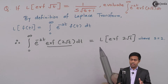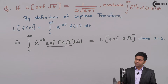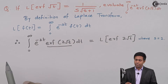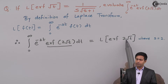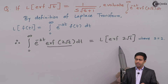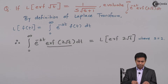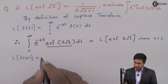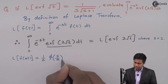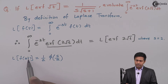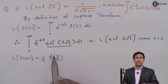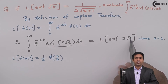Now let's find out the Laplace of error function of 2 root t and after that substitute s as 2 to get the final answer. We have been given Laplace of error function of root t which is 1 by s root of s plus 1, and we have to find Laplace of error function of 2 root t. If you observe carefully, this can match with change of scale property. The change of scale property states that Laplace of f of at is given as 1 by a phi of s by a. The coefficient of root t is 2.